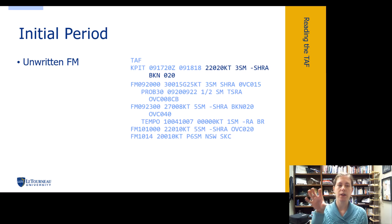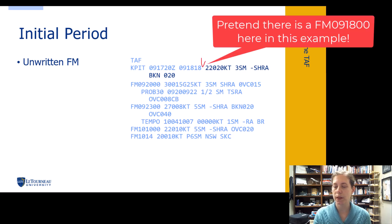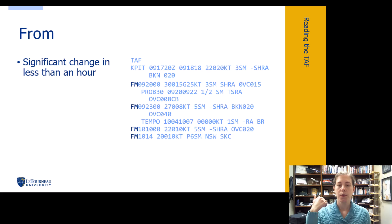So the first line of our TAF is an unwritten from period. They always start with what's called a from period. And we're going to talk in a moment here about what from is. But first, just realize that first line of the TAF, it doesn't say from, but this is where it would be if it did say from. So it doesn't say from, but it is from.